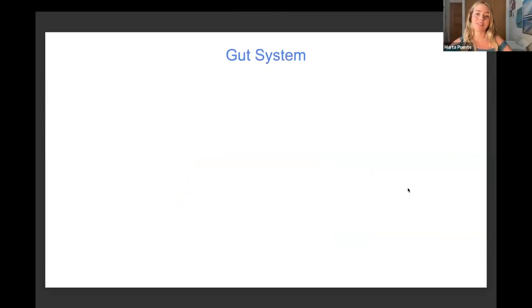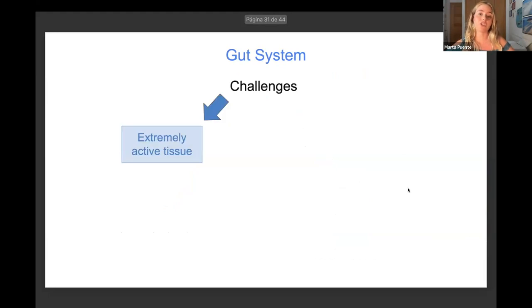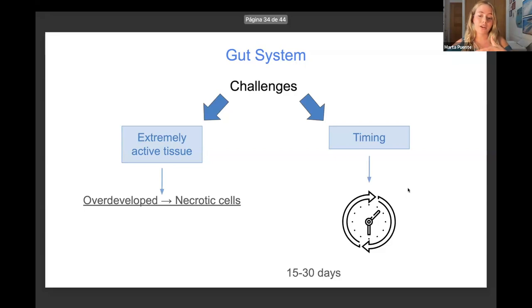Thank you, Corey. Now let's move on to the gut system, which is the one we have been working on the most because it presents really complex challenges. First, we are talking about an extremely active tissue with a high cell turnover. The organoids start overdeveloping, and as a result, we get a high amount of cells going necrotic. The second challenge, which I think Corey and I can agree has been the most difficult one, is the timing. The problem with gut organoids is that they usually last between 15 to 30 days, and we are trying to create a six-month culture.